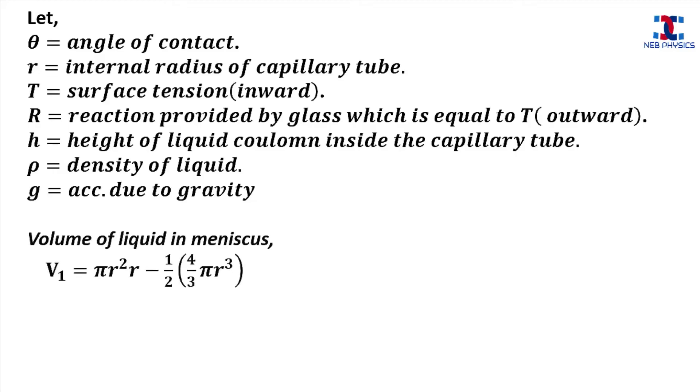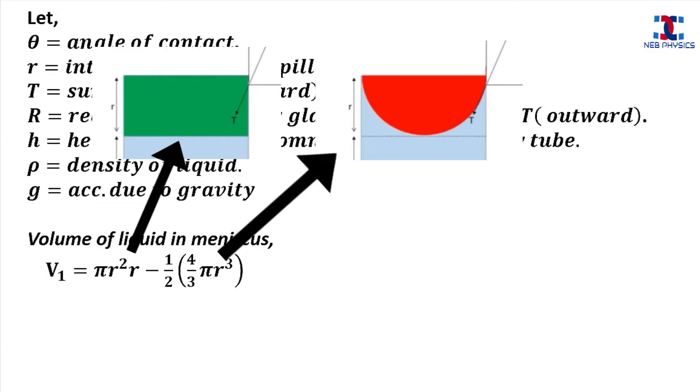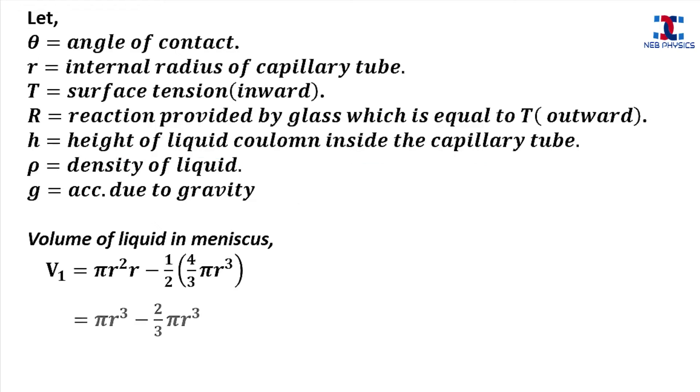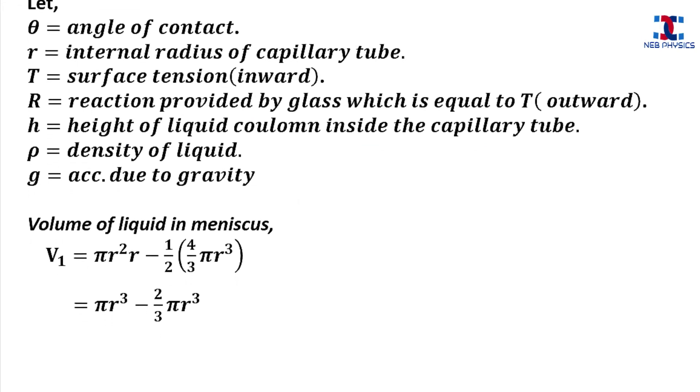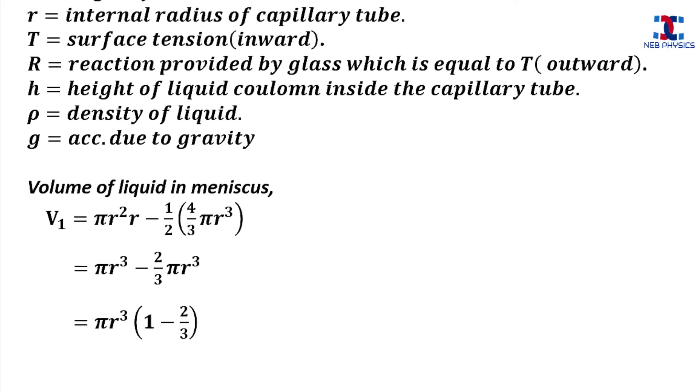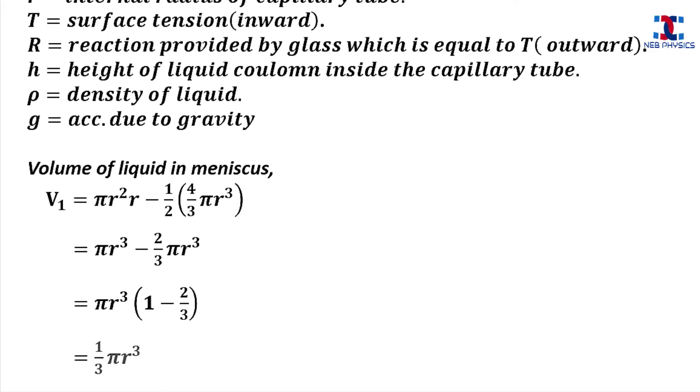So the volume of liquid in the meniscus can be written as v₁ = πr²r - ½(4/3 πr³). This can be written as πr³ - 2/3 πr³, and solving this we get v₁ = 1/3 πr³.